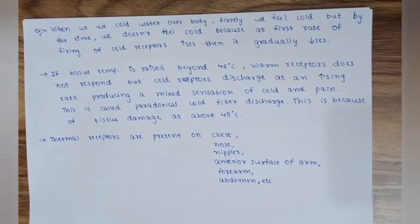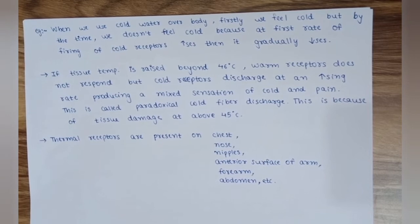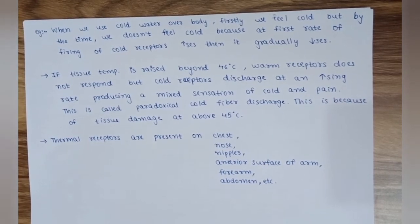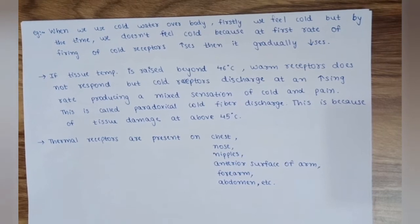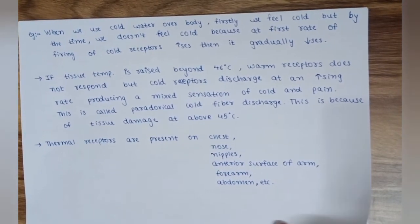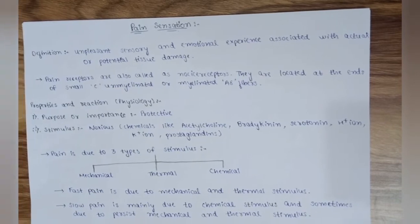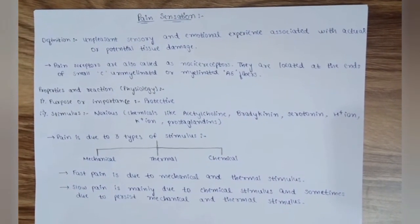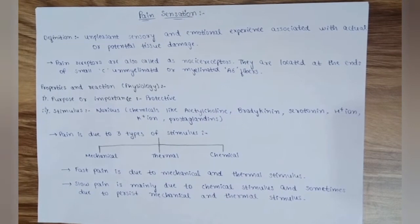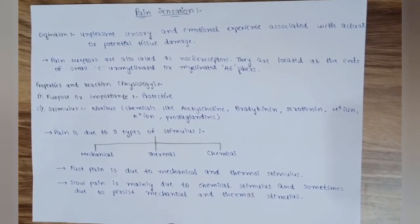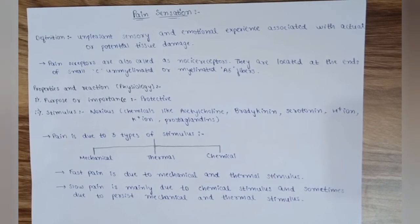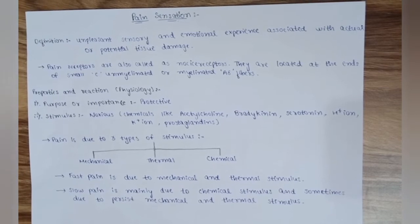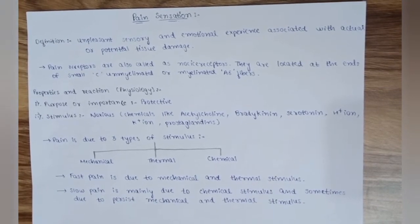Paradoxical cold fiber discharge occurs due to tissue damage above 45 degrees Celsius. Thermal receptors are present on the chest, nose, nipples, anterior surface of arm, forearm, abdomen, etc. The definition of pain is a sensory and emotional experience associated with actual or potential tissue damage.